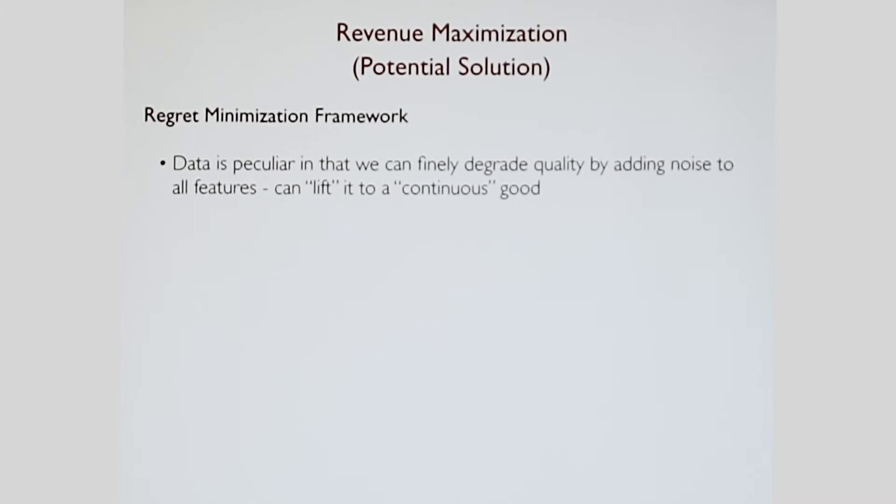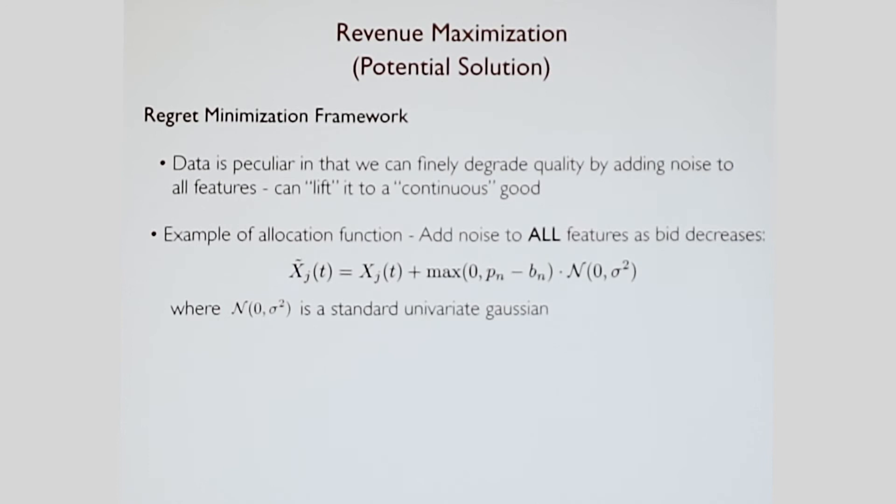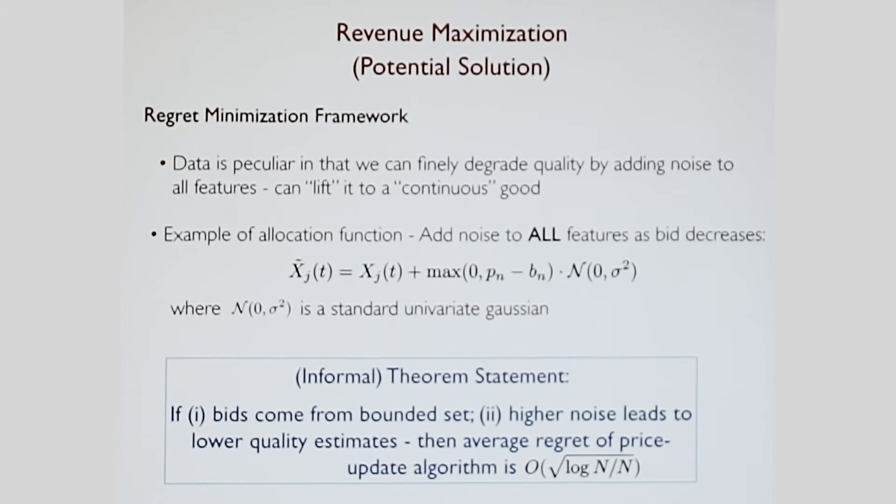So what can we do? The nice thing is that data is peculiar in the sense that even though these are subset problems, so I'm trying to select subset of the features to give to people, you can also kind of think of it as a continuous good. You can kind of lift it to a continuous good by adding noise to all the features. I can degrade all the information in a very fine way by adding different amounts of noise to it. For example, one thing you could do is that for each feature, I add Gaussian noise to it based on the difference between the current price and the bid that's being made. The informal theorem statement is that if all the bids come from some bounded set, and higher noise leads to low quality estimates, then the average regret of price update algorithms is going to be decaying just as you would hope, as the standard in regret.